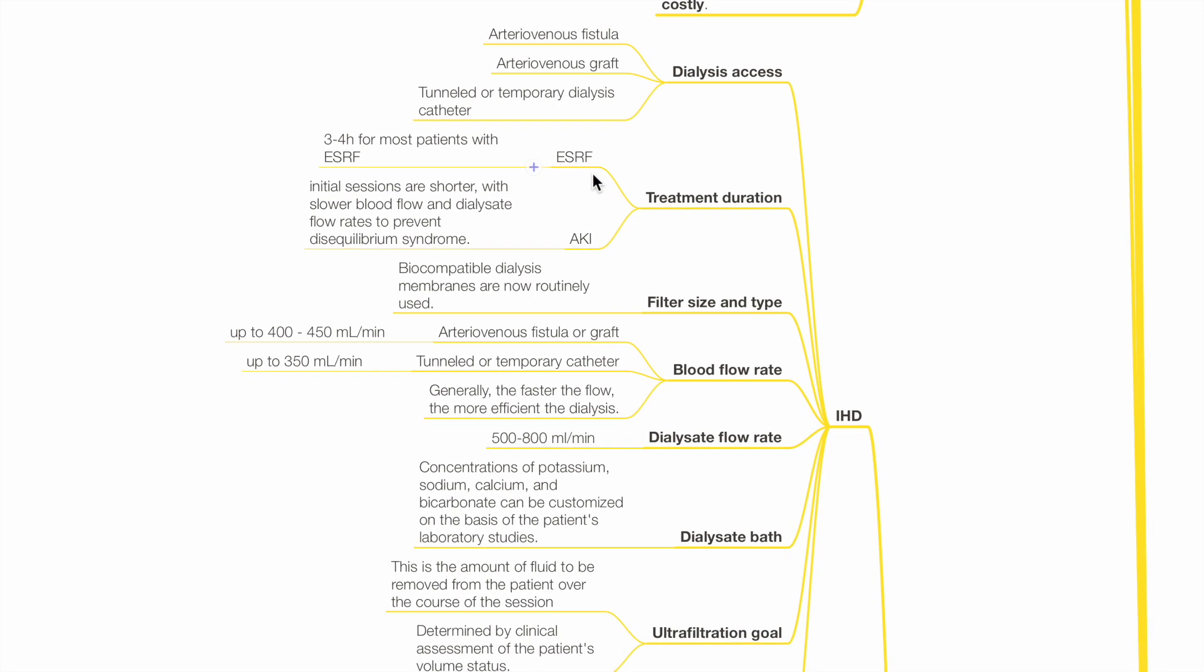Treatment duration. For ESRF, it is typically 3 to 4 hours. For AKI, initial sessions are shorter with slower blood flow and dialysate flow rates to prevent disequilibrium syndrome.